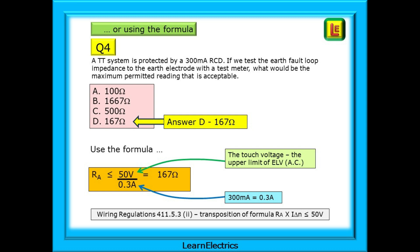50 volts is what we call touch voltage, the upper limit of the ELV voltage range. And 0.3 amps is the same as 300mA. 50 volts divided by 0.3 amps is 167 ohms. Again, answer D.